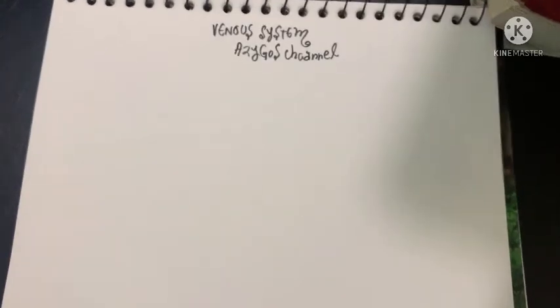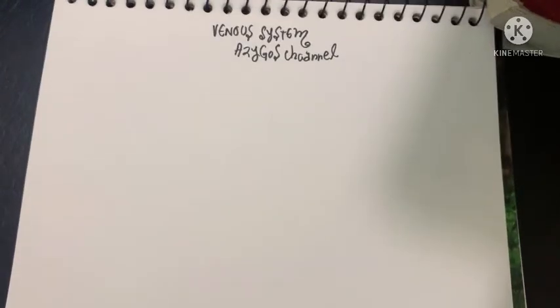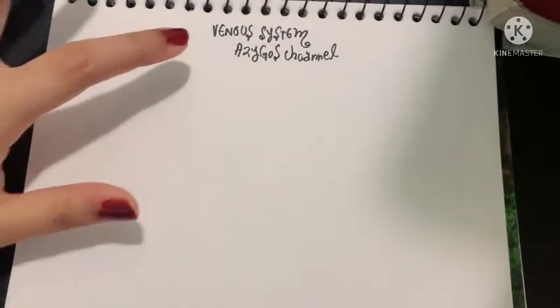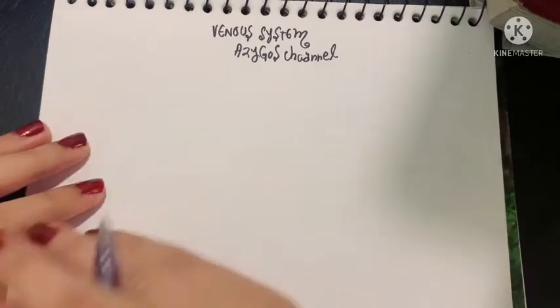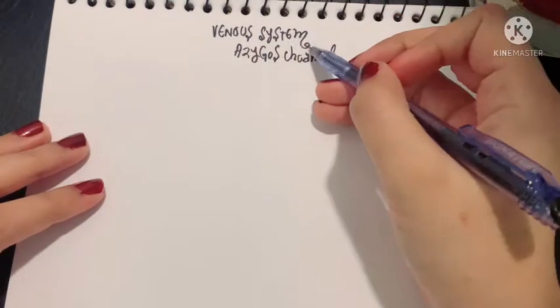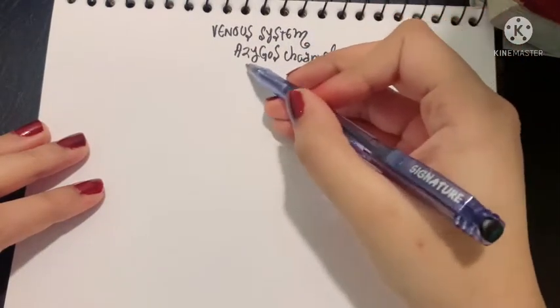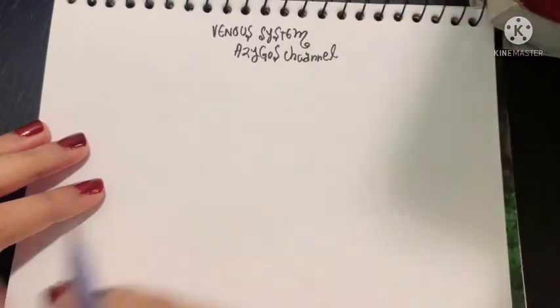Assalamu alaikum, this is Dr. Hasna and today we will be studying a complex topic which is the venous system of the thoracic wall. The venous system of your thoracic wall is mainly the azygous vein.